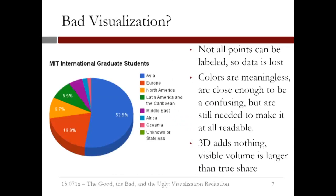Finally, we'll look at a pie chart I made of the origins of the international students at MIT. I made this chart with the default settings in Google Sheets. First of all, not all of the segments were labeled, so that data is lost for the Middle East, Africa, Oceania, and the unknown regions. Second, again, we have colors that are arbitrary and almost close enough to be confusing.